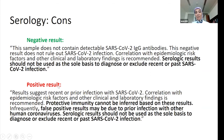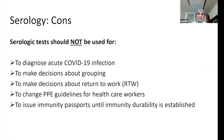With positive results, you cannot just say the antibody is positive and the patient is probably immune. We cannot confirm that yet. There should be a caution that this could also be a false positive result, which is why two-step assays should be used.